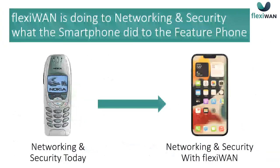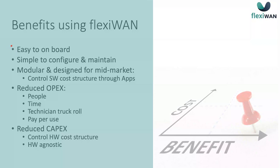We always say that we do to enterprise networking and security what the smartphone did to the feature phone — this shift from a closed phone like a Nokia phone to smartphones with the ability to install applications was a paradigm shift, and we're doing the same thing for networking and security. If we summarize the benefits of FlexiWAN: first, it's very easy to onboard customers, whether you're an enterprise or a service provider or systems integrator onboarding multiple customers. Very easy to configure and maintain, which reduces cost. It has a modular design with strong advantages.